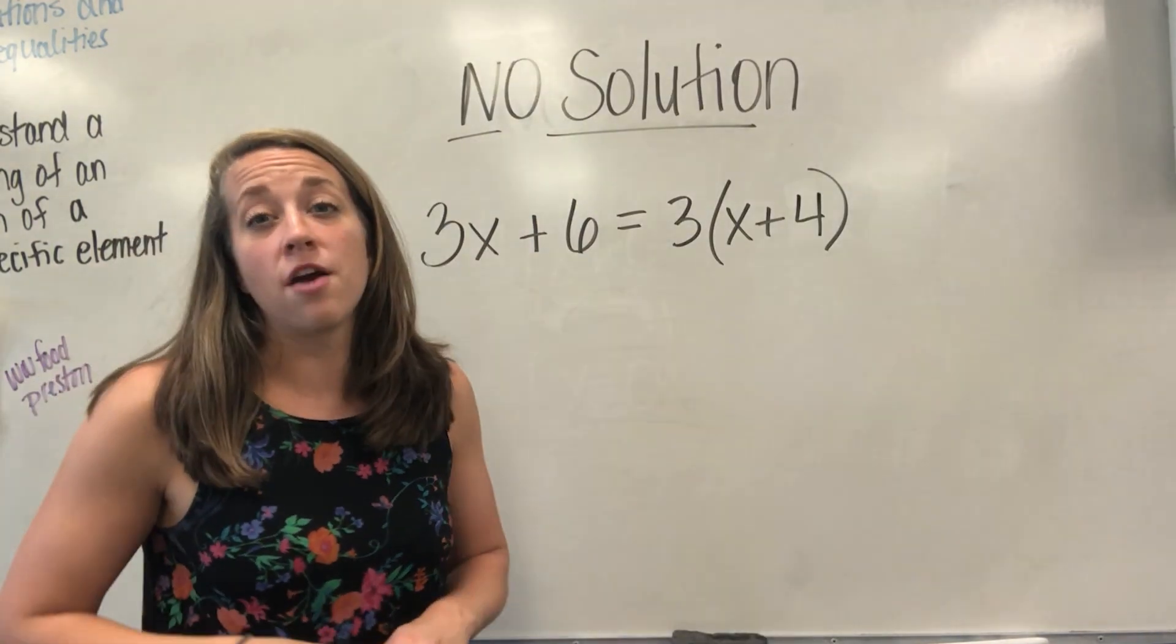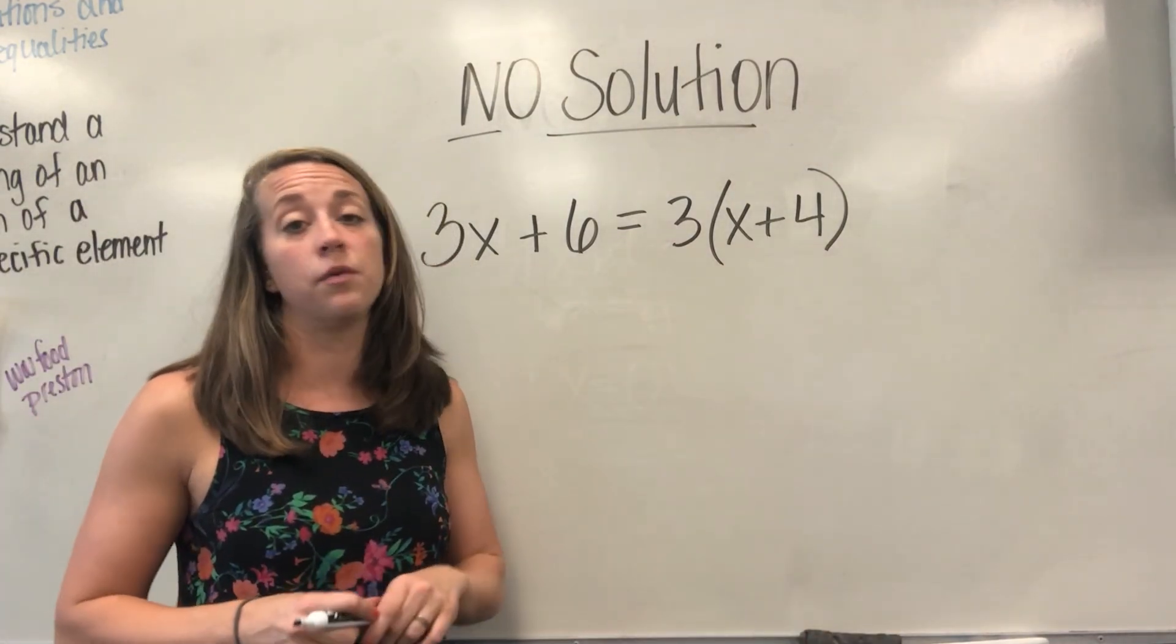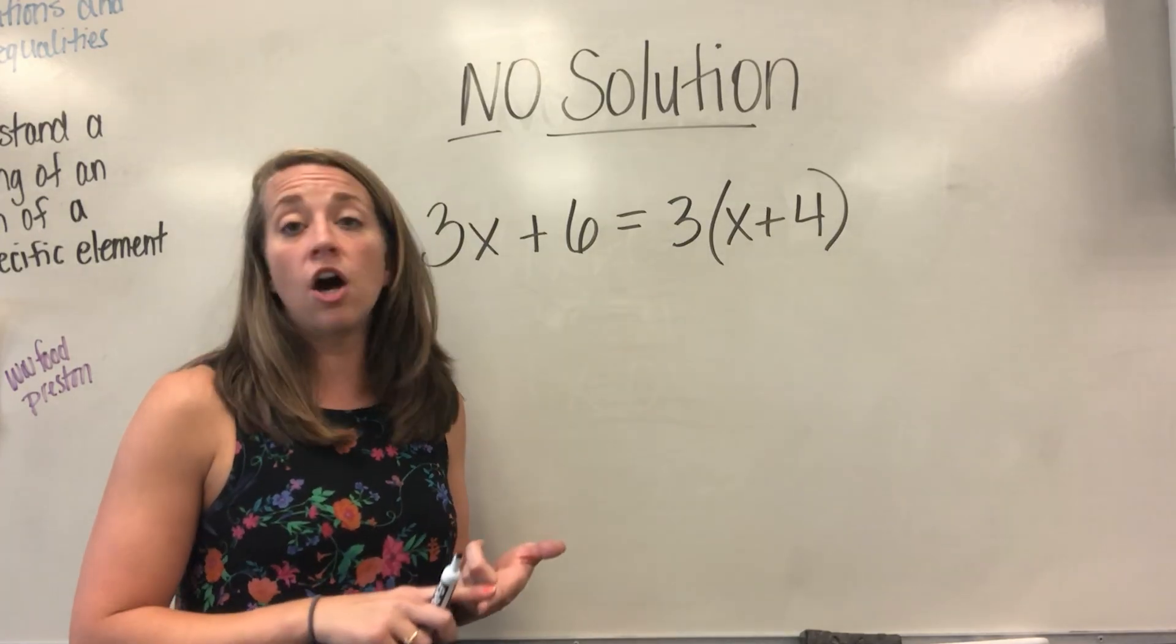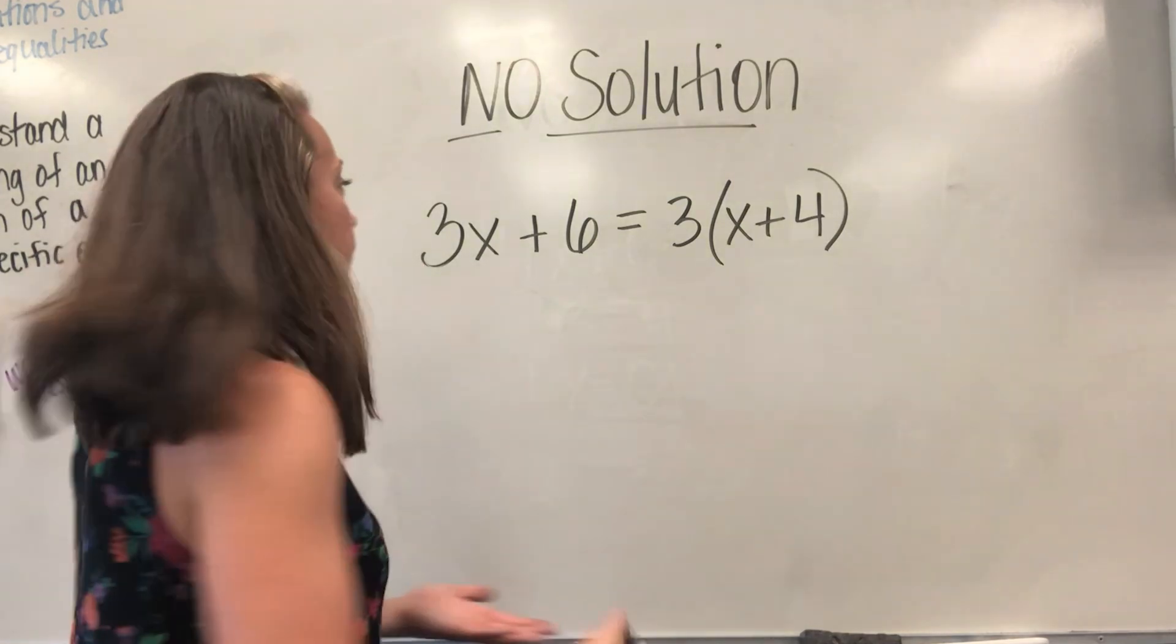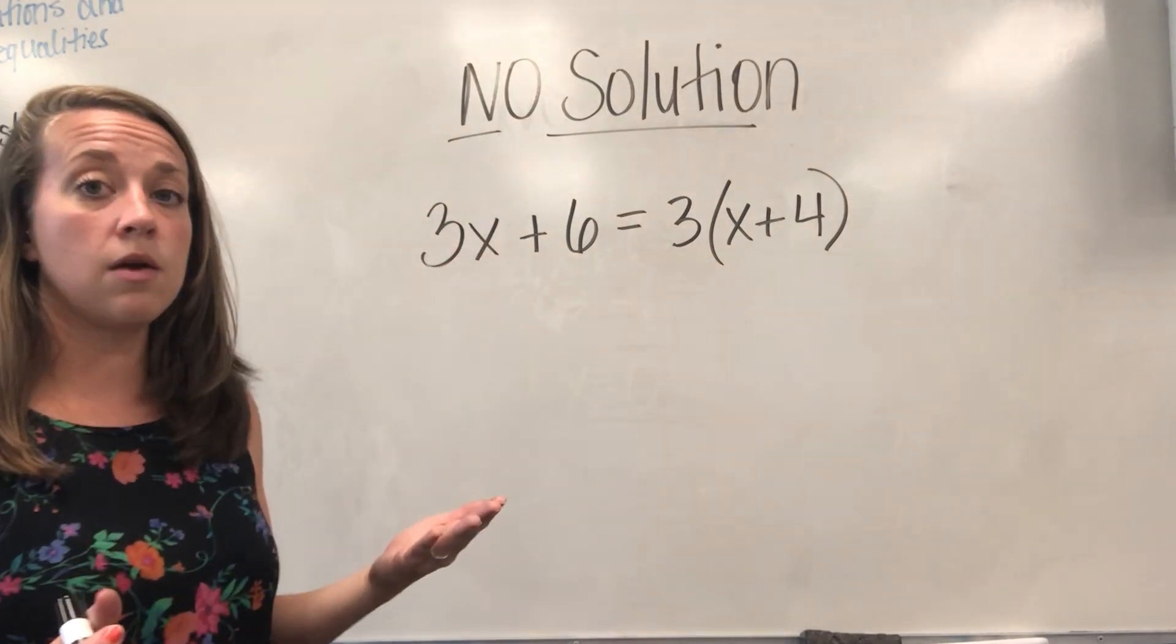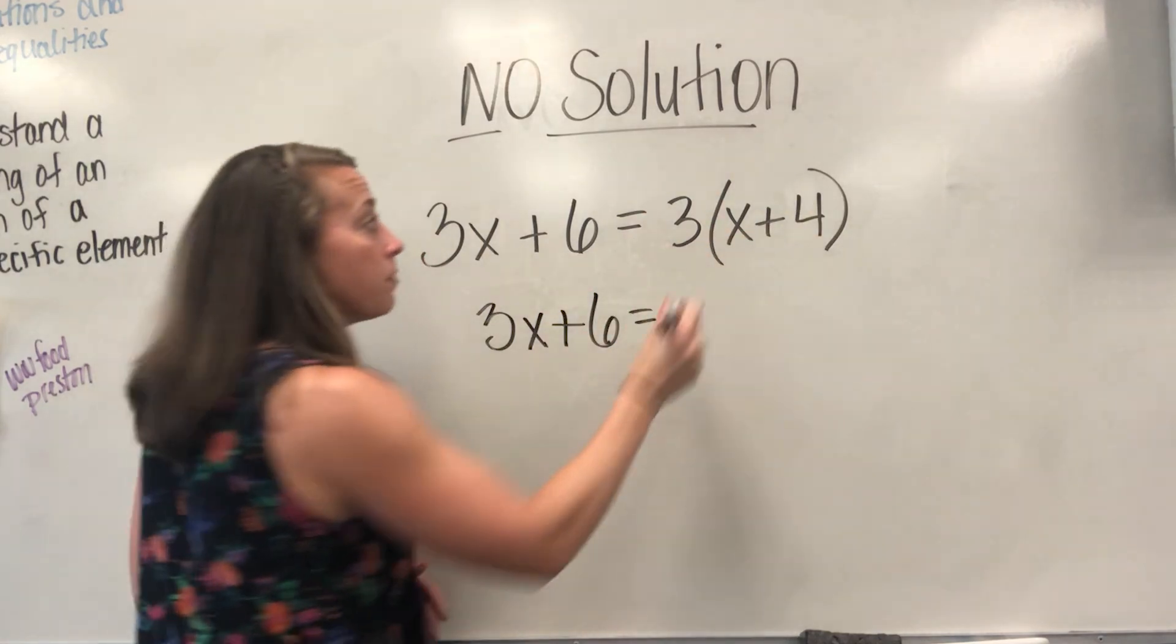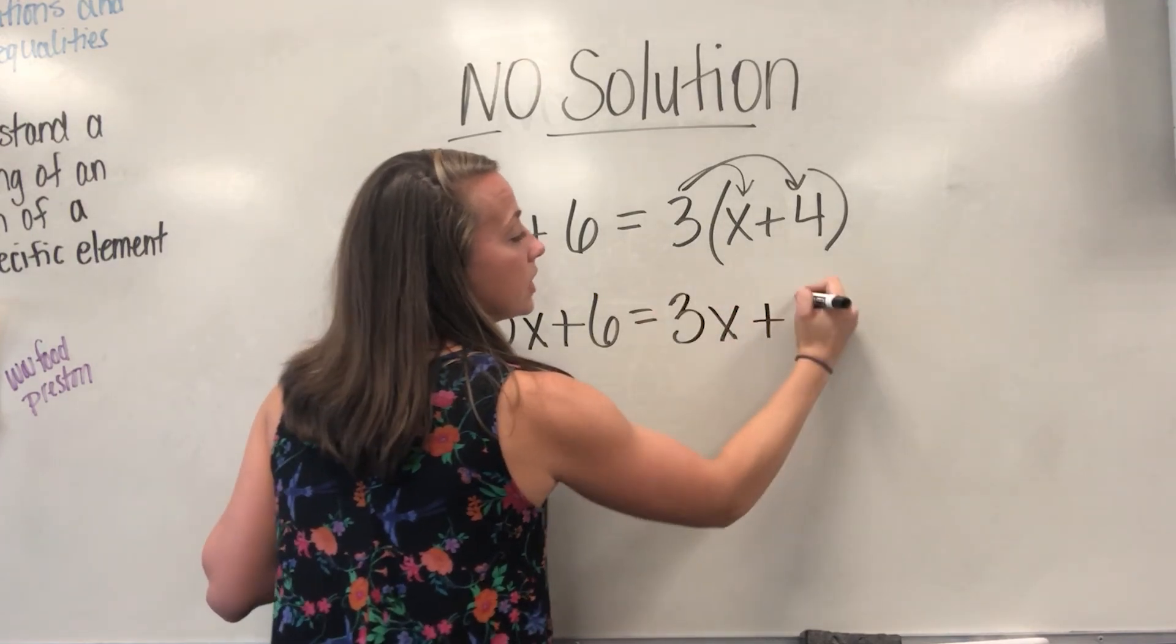The next type of problem we're going to talk about is one that doesn't have any solution at all. This basically means that I could try every number in the world, and it would never, ever work. So really, there's no point in wasting your time trying all those different numbers. You could try positives, negatives, decimals, fractions. None of those numbers would ever work in this equation. So let's talk about what it looks like when you solve it. I have 3X plus 6 equals 3 times X plus 4.